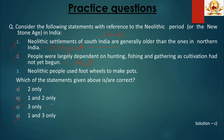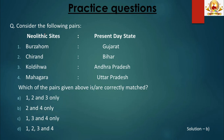Question 3: Consider the following pairs — Neolithic sites and their present-day states. Pair 1: Burzahom with Gujarat. Pair 2: Chirand in Bihar. Pair 3: Koldihwa in Andhra Pradesh. Pair 4: Mahagara in Uttar Pradesh. Which pairs are correctly matched? We discussed that Burzahom is in present-day Kashmir, not Gujarat — so Pair 1 is incorrect, making options A, C and D invalid. The only remaining option is B, 2 and 4 only, which is our answer.